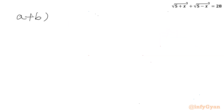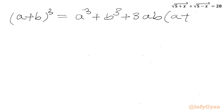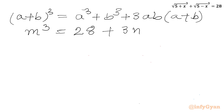Now I will use another expansion: a plus b whole cubed equals a cubed plus b cubed plus 3ab times a plus b. Writing a plus b as m, this becomes m cubed equals 28 plus 3mn.